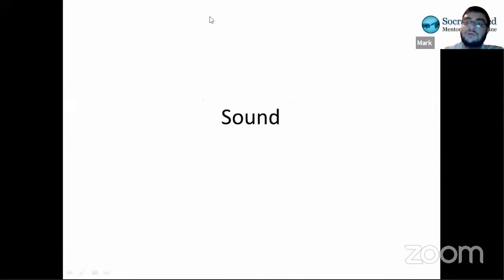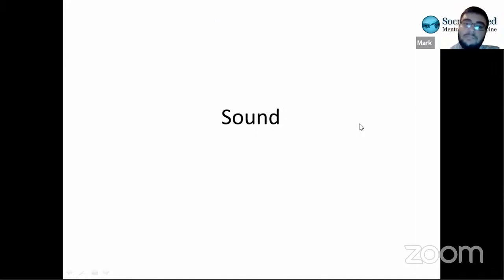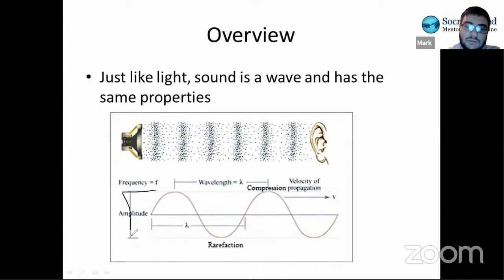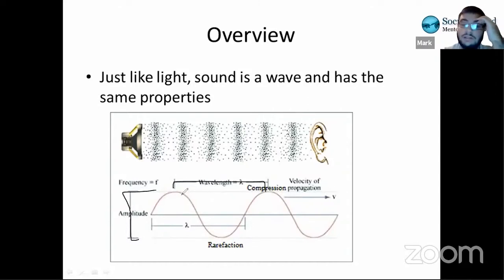Moving on to our final topic: sound. Just like light, sound is a wave and has the same properties as any wave — it has amplitude, wavelength, and frequency. Frequency is how many wavelengths per second. The speed of a sound wave is usually 300 meters per second in air. Remember that wavelength = velocity / frequency, from when we covered light waves.